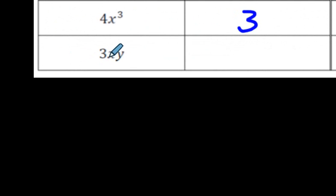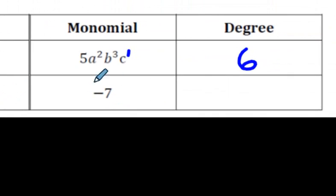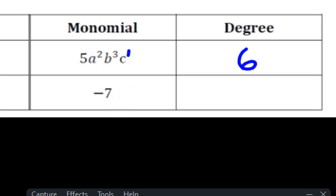Let's go to this one, 3xy. Well, there's one invisible one there and one there, so the degree would be 2. And this one doesn't have any variable at all. So this is a question that actually I'm unsure of, and I should really quickly check.